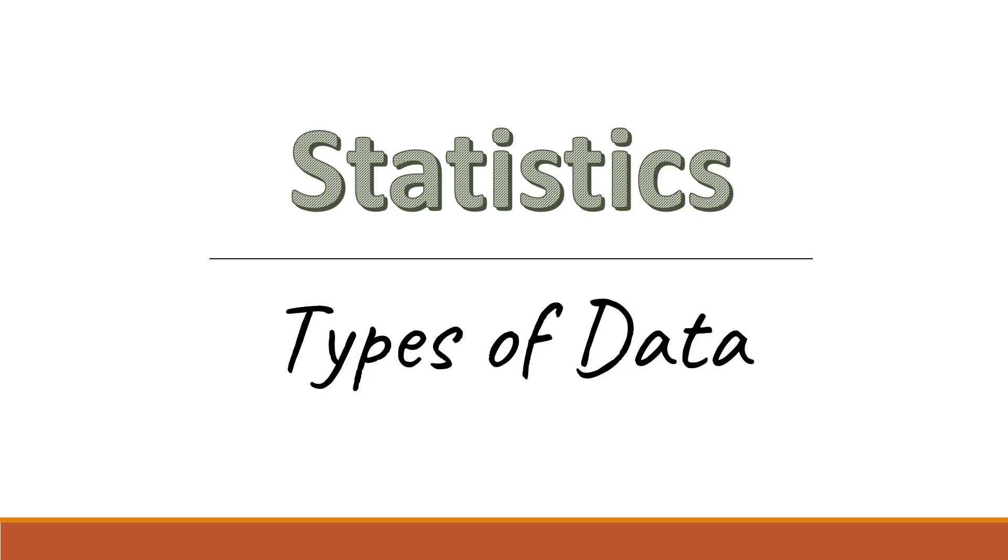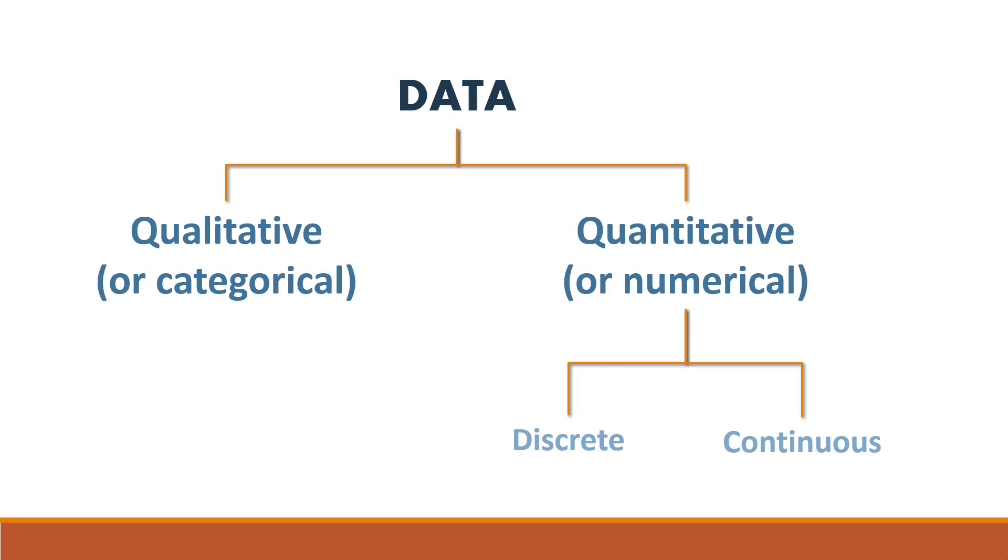Hi everyone! In this video, we're going to learn about different types of data. Data can be either qualitative, another name for that is categorical, or quantitative, another name for that is numerical. And quantitative data can be either discrete or continuous. Let's learn about each type.